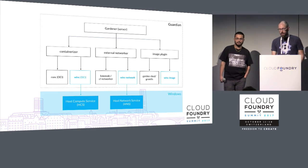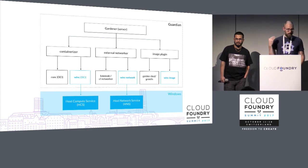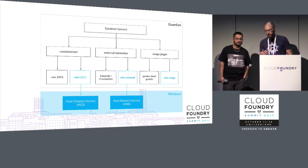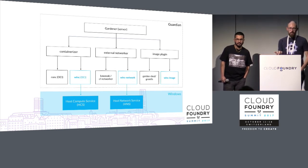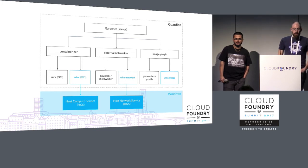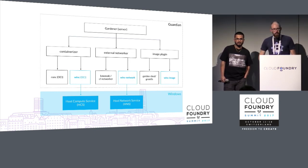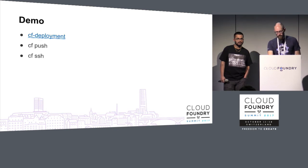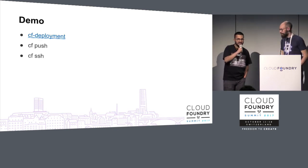WinC talks directly to the Windows host compute service, and this allows spinning up and spinning down containers and managing their whole lifecycle. For networking, we wrote a networking plugin called WinC-network, which talks to the host network service alongside the host compute service in Windows. For images, we currently have a dummy WinC image plugin which gives you access to a root file system installed on the host.